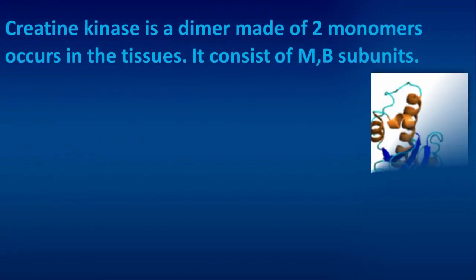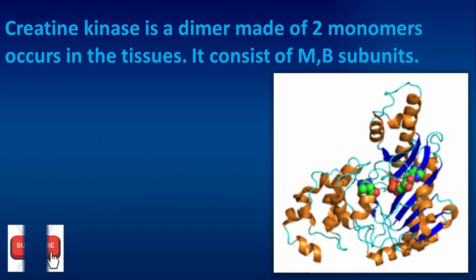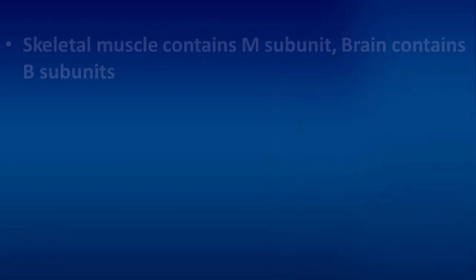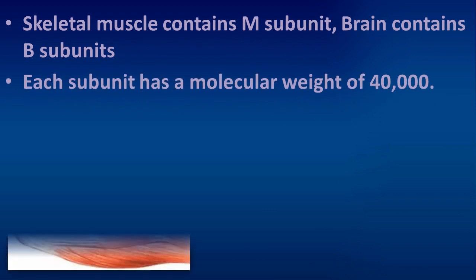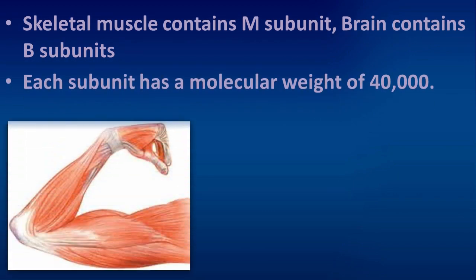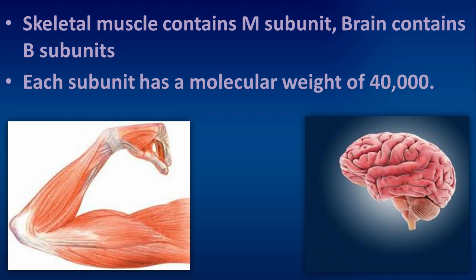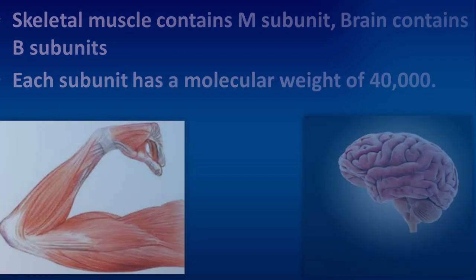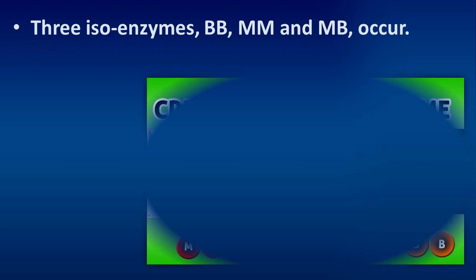Creatine kinase is a dimer made of two monomers that occurs in the tissues. It consists of M and B subunits. Skeletal muscle contains M-subunits, and brain contains B-subunits. Each subunit has a molecular weight of 40,000. There are 3 isoenzymes.